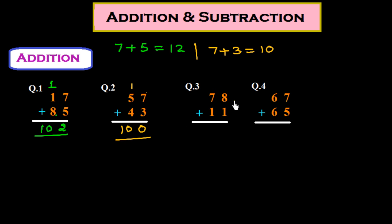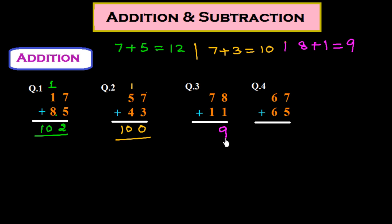In question number 3, the unit place numbers are 8 and 1. We add 8 plus 1, which is 9, and write 9 down. There is no carry here, so we add the tens place: 7 plus 1 equals 8, giving us 89.